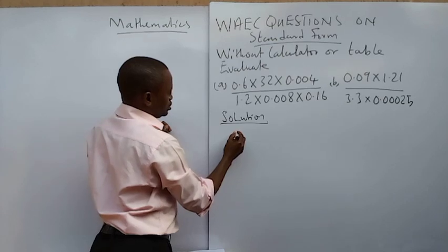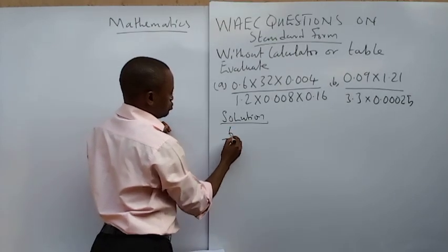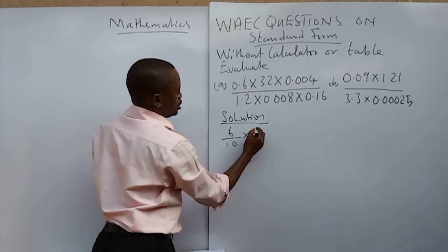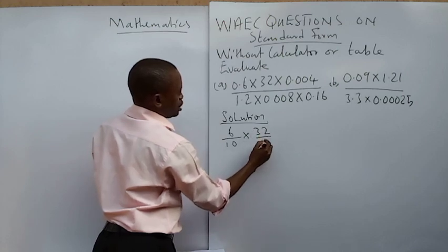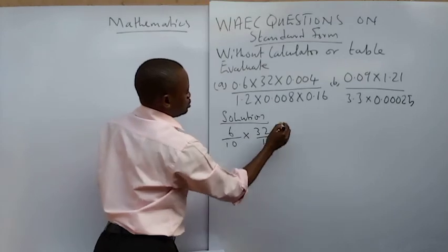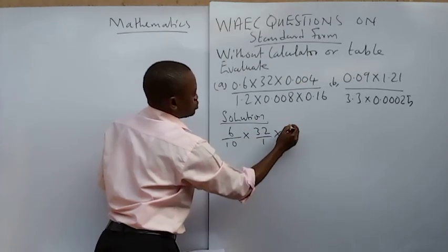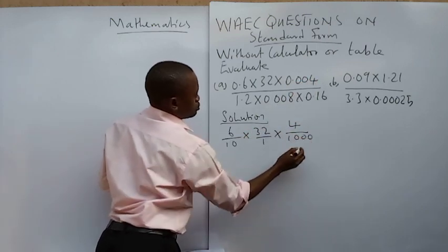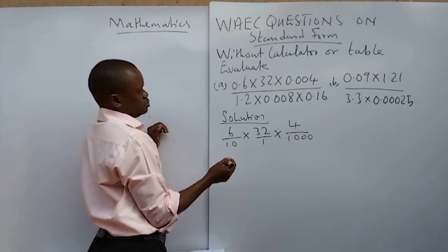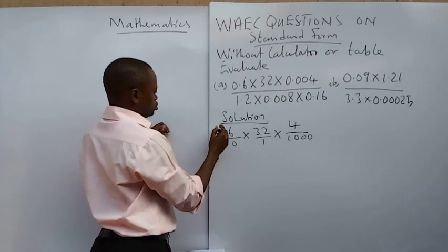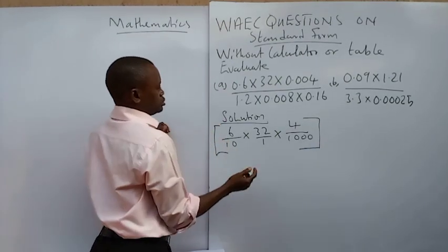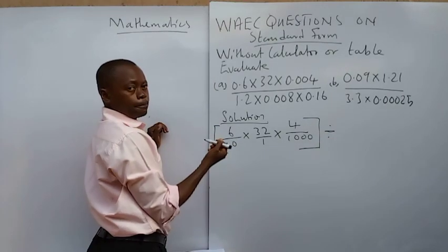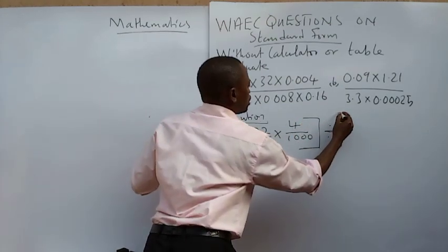So 0.6 I will change to 6 over 10. Multiplying, 32 is there — not a fraction — but I will make it over 1. Multiplying, 0.004 will be 4 over 1,000. Permit me to put this in a bracket so that this division can come like this. Then I will open another bracket for the denominator.